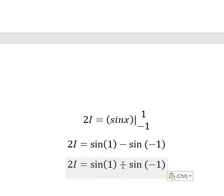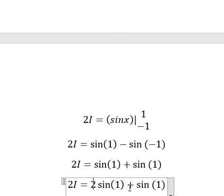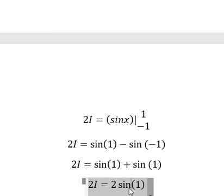Since negative times negative gives positive, we have two times sine of one. Then we divide both sides by two to get I equals sine of one over two.